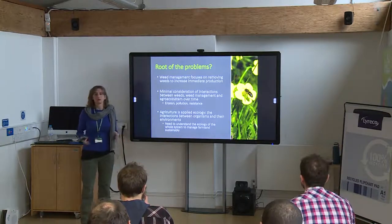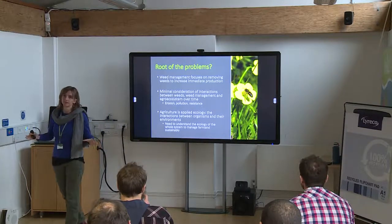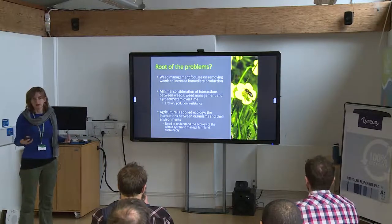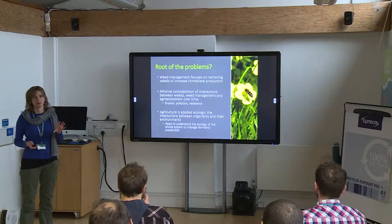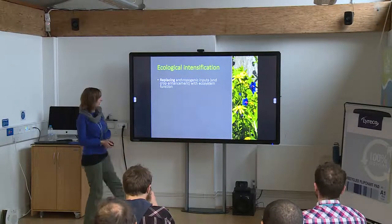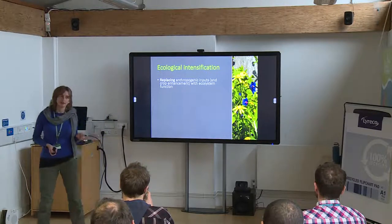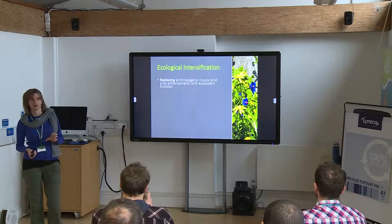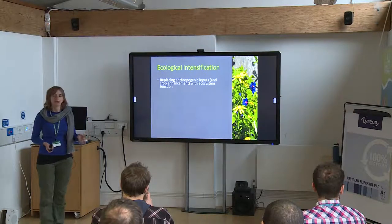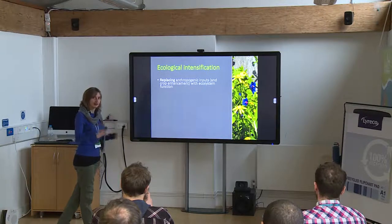What we need to do with weed management, as with any other aspect of farming, is think of the whole system. Agriculture is applied ecology — it's a bunch of organisms interacting with the environment. So we need to understand the ecology of the system in order to manage it sustainably. This is the idea behind ecological intensification: if we understand the ecology, we can replace inputs with natural functions of ecosystems. Instead of removing weeds with chemicals and tillage, can we create ecosystems that are inherently resilient to weeds and that inherently limit their growth?